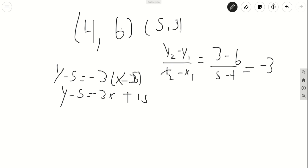Sorry if that 5 doesn't look good enough. And here you just add 5 on both sides so you can get y by itself. And you get y equals negative 3x plus 20.